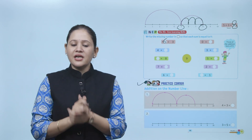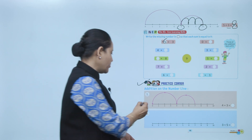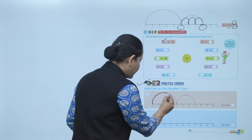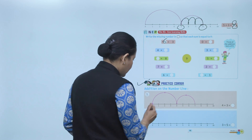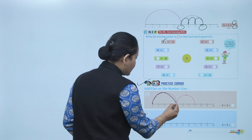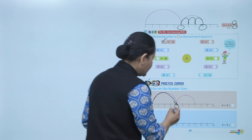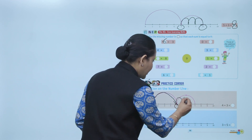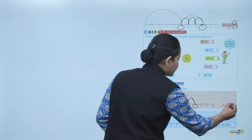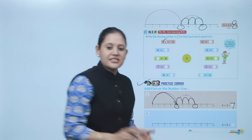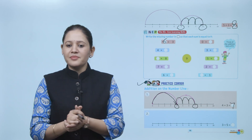Practice corner — addition on the number line. Add four plus three. From zero we move to number four, then three places to the right: one, two, three — we reach number seven. Four plus three equals seven. This is how you add numbers on the number line.